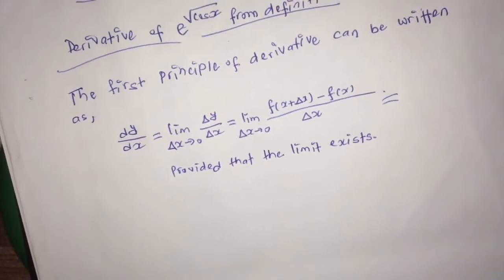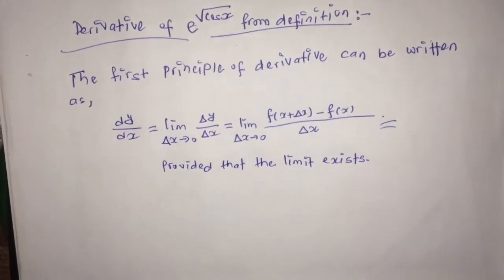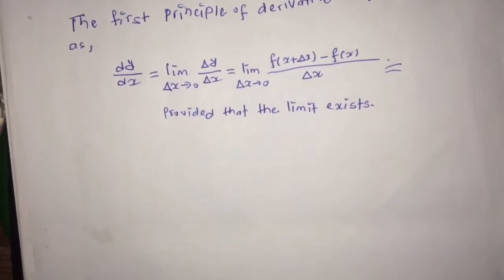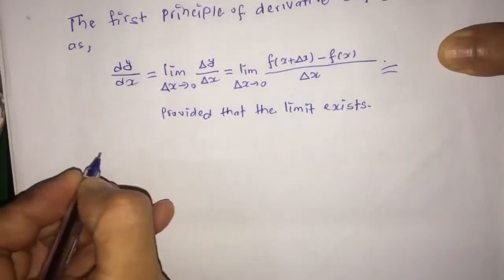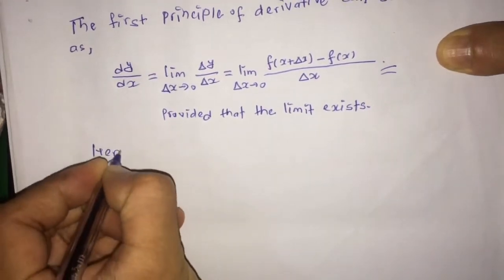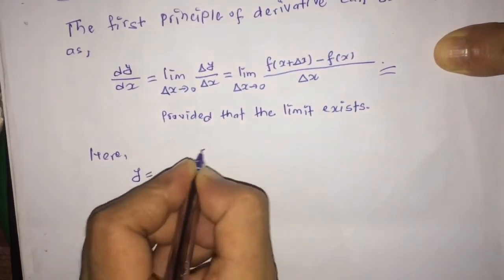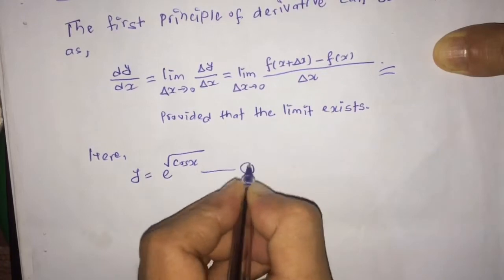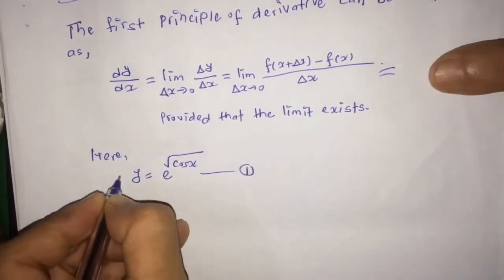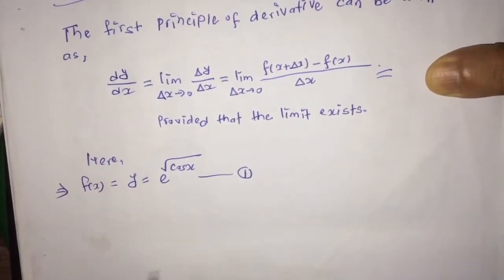This means if the given limit as δx tends to 0 of f(x + δx) minus f(x), whole divided by δx, does not exist, then you cannot find the derivative of the given function.